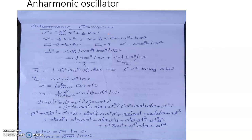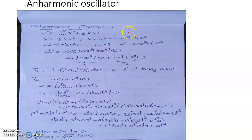Seldom will these oscillators be perfectly harmonic — their potential will depend upon higher order terms in the instantaneous position. Generally, the instantaneous position is comparatively small, so x cubed, x to the fourth, etc., will be rather small. Under this assumption, we take the potential satisfied by the oscillator as half k x squared, since the higher order terms are negligible.